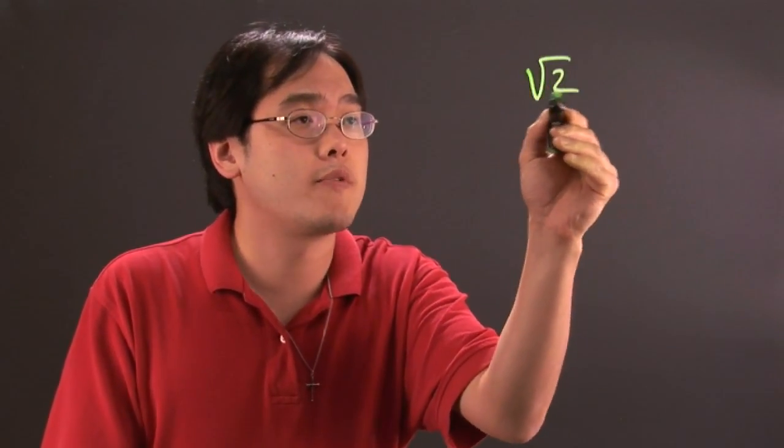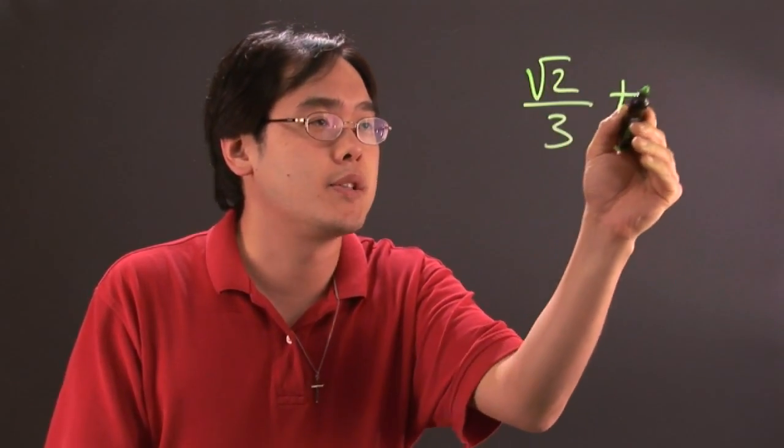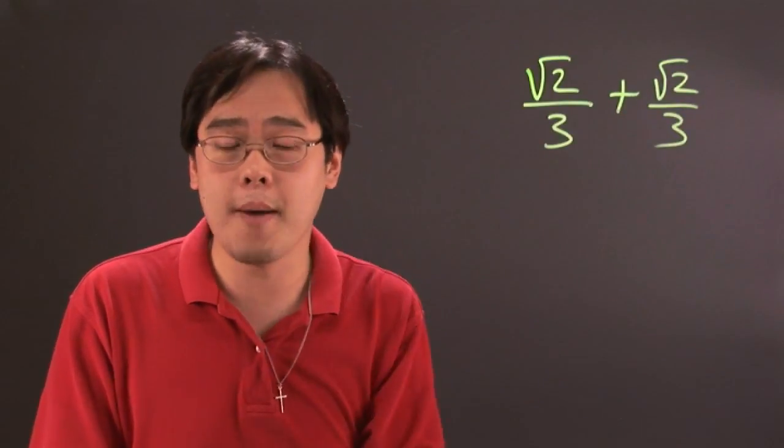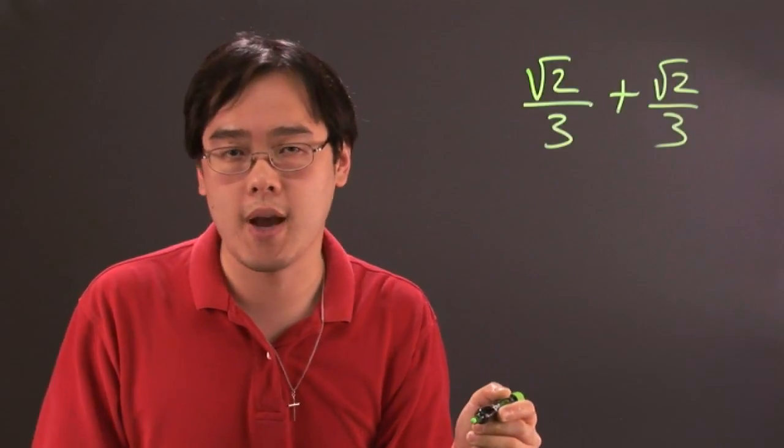Suppose you have square root of 2 over 3 plus another square root of 2 over 3. The fact that they have the same denominator is a good thing because you don't have to worry about the least common denominator.